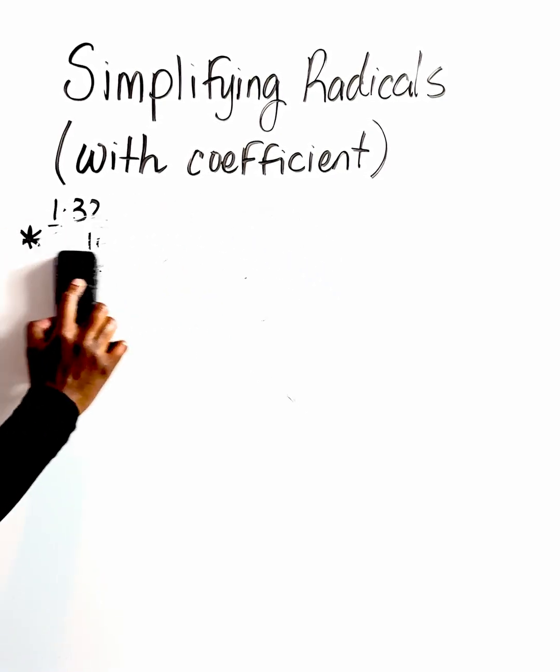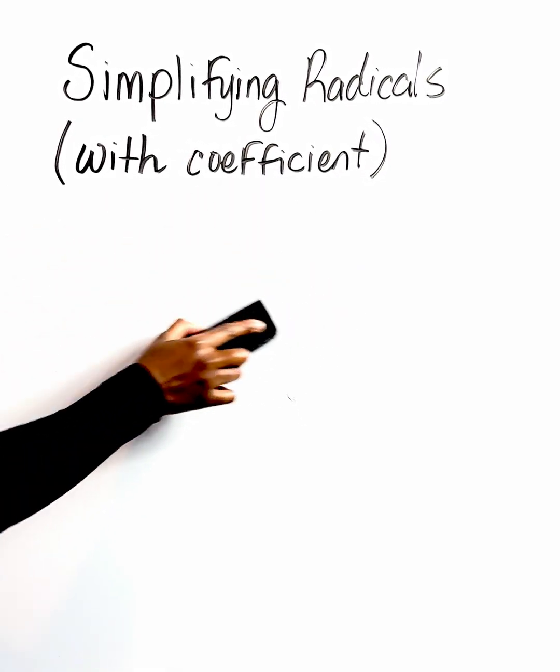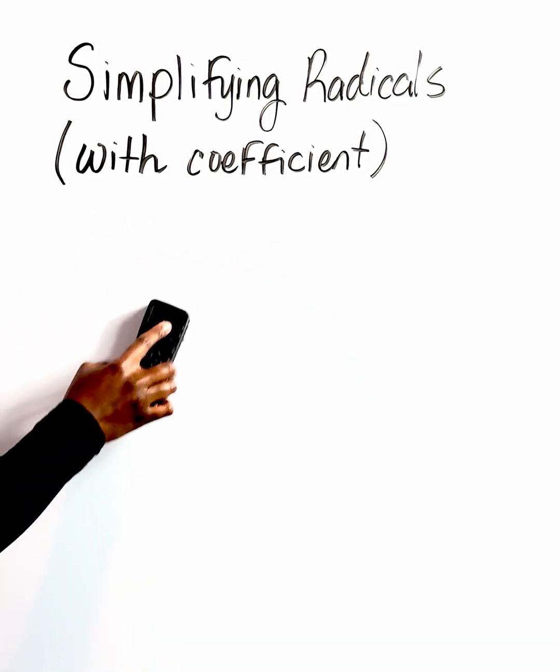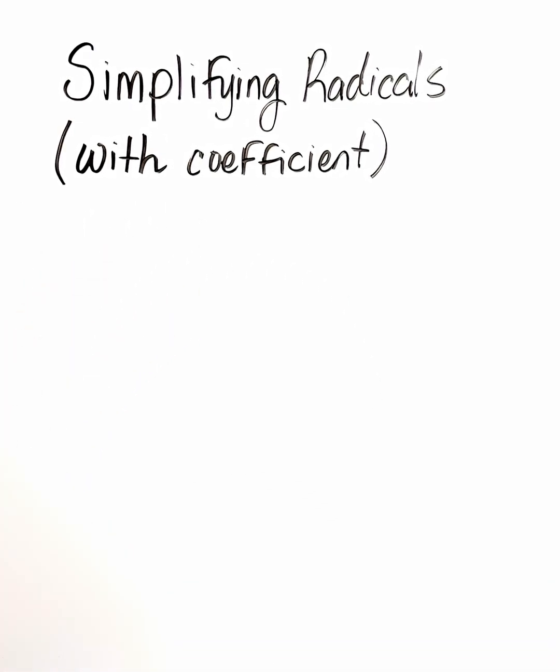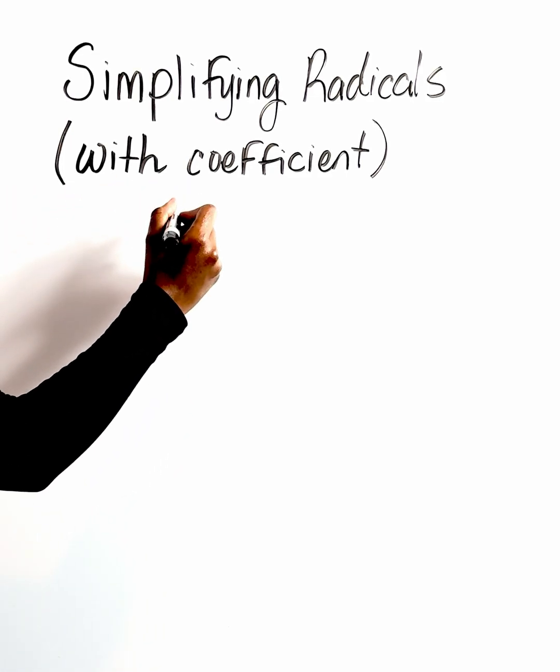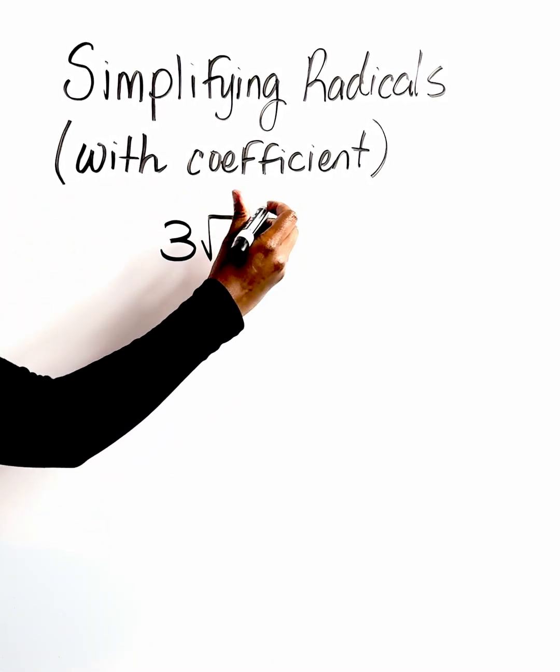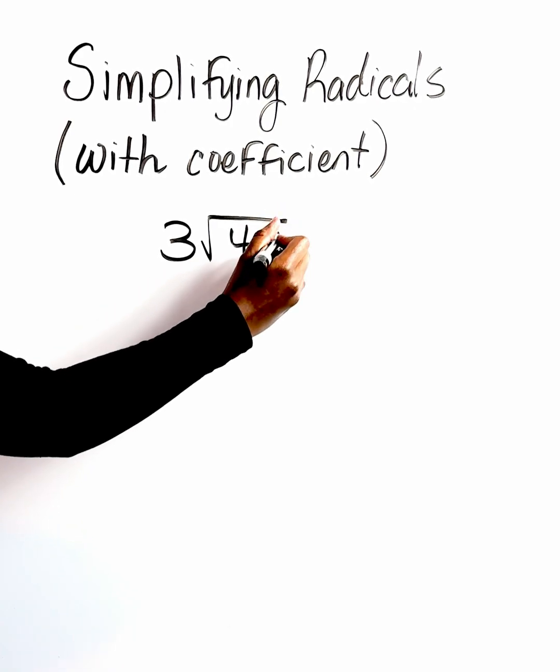And if you find that you are struggling with this, that means that you need to go back and spend some more time with simplifying radicals without a coefficient. Because the only extra step that we have is just multiplying the number in the front. So you always want to make sure that you have mastered the previous situation before you move forward.